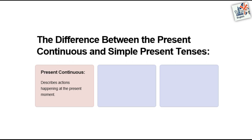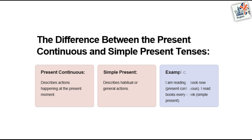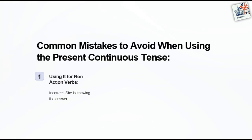The difference between the present continuous and simple present tenses. Present continuous describes actions happening at the present moment. Simple present describes habitual or general actions. Example: 'I am reading a book now' — present continuous. 'I read books every week' — simple present.